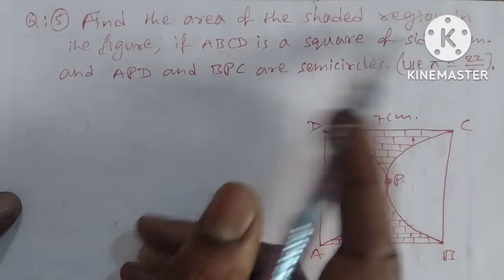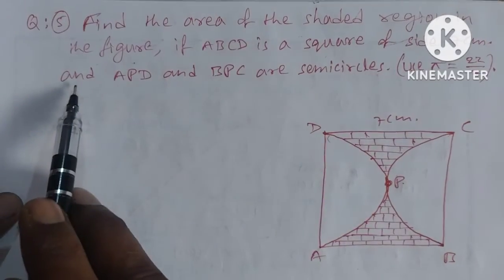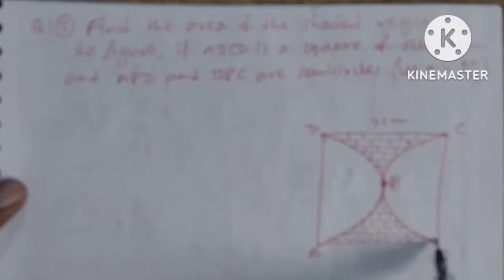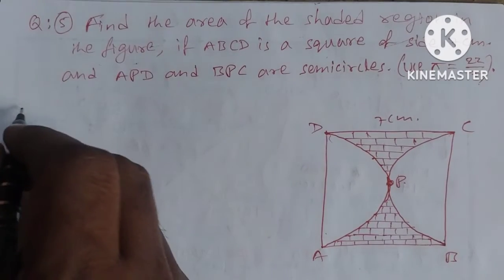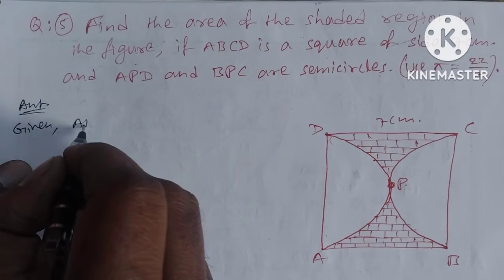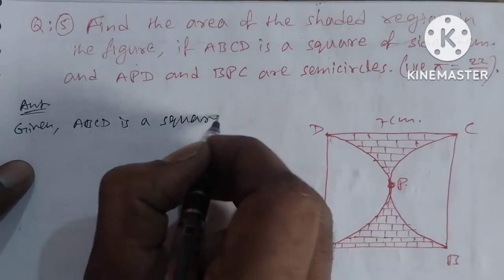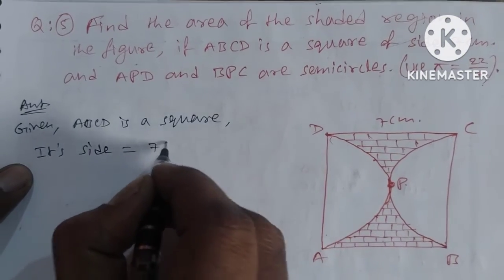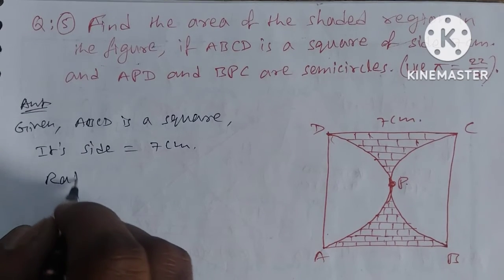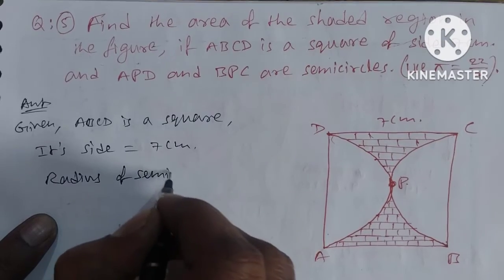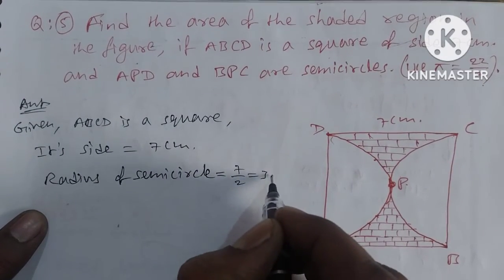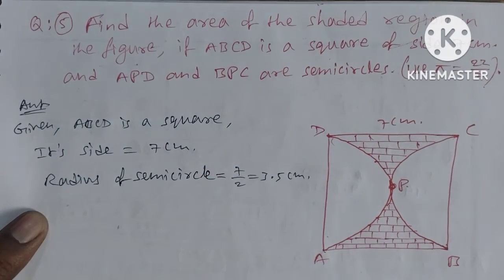Question number 5: find the area of the shaded region in the figure, where ABCD is a square of side 7 cm and APD and BPC are semicircles. Use π = 22/7. The side is equal to 7 cm. The radius of the semicircle equals diameter / 2 = 7/2 = 3.5 cm.